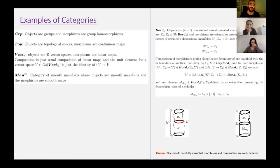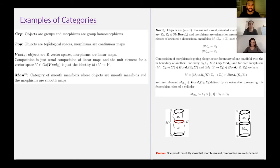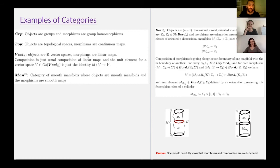Let's give some examples of categories. Simply, any sets with additional structure and structure-preserving maps can be made into a category. One example is groups: groups are sets with a group product satisfying group properties. We can think of groups as objects and group homomorphisms as morphisms, giving rise to the category of groups. Also, topological spaces can be made into a category: objects are topological spaces and morphisms are continuous maps, which preserve the topology. Another example is K-vector spaces: objects are K-vector spaces and morphisms are linear maps.